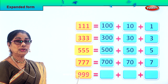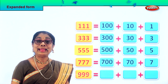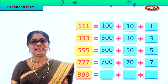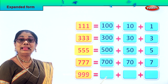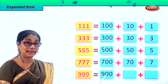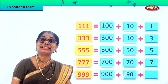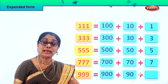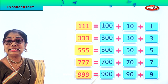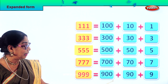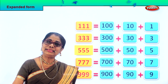Now we have nine ones, nine tens, nine hundreds — 999, nine hundred and ninety-nine. Nine hundred and ninety-nine is equal to nine hundred plus ninety plus nine. Nine hundred and ninety-nine is equal to nine hundred plus ninety plus nine. Did you enjoy? Shall we take some more sums and do expanded form?